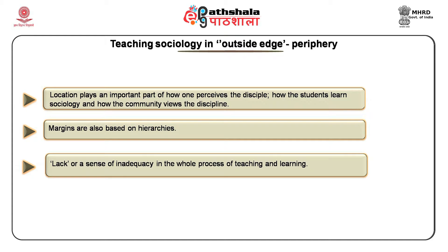For example, if Delhi is a center and metropolitan space for colleges and universities in Chandigarh, then Chandigarh itself becomes a center for a college based in a rural district of Punjab. In the same way, Delhi becomes a margin in relation to an established university abroad. The concept is relative, based on an intermixture of geographical location and ideas generated. Singh, reflecting upon the teaching experiences of sociology for the teacher, the student and the wider community, conceptualizes it in the sense of a lack or a sense of inadequacy in the whole process.